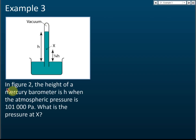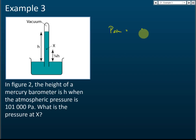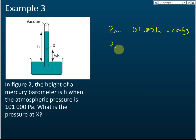Example three, figure two: the height of a mercury barometer is h when the atmospheric pressure is 101,000 pascal. What is the pressure at x? Give your answer in pascal. The atmospheric pressure is equal to 101,000 pascal, and this is equal to h cm mercury.